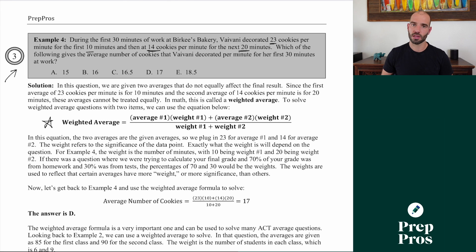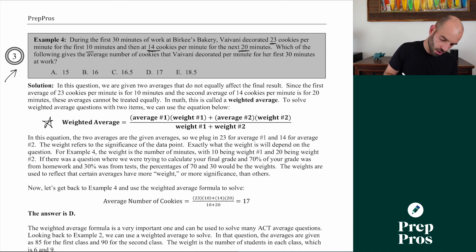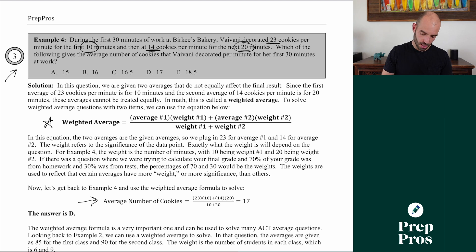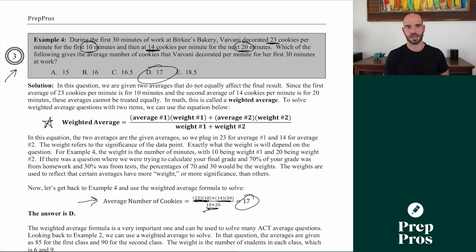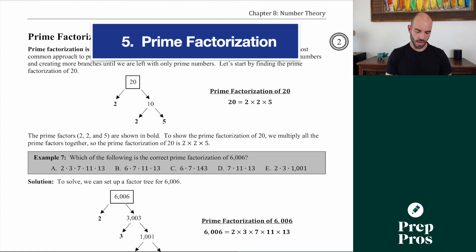If you know the weighted average equation, you can solve this in one quick step — and speed is really important on ACT math. With the weighted average, take each average and multiply it by its weight. Here the averages are 23 and 14 cookies per minute, and the weights are 10 and 20 minutes. Set up: (23 times 10 plus 14 times 20) divided by 30 total minutes, and you get an average of 17. Any question with two different averages — like different speeds over different times — can be solved this way.